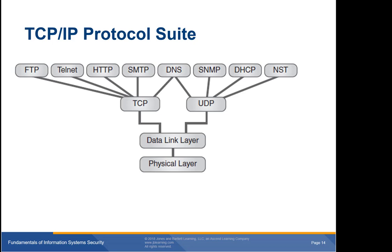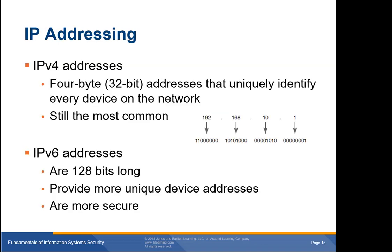The US Department of Defense developed TCP/IP to provide a highly reliable and fault-tolerant network infrastructure. Reliability, not security, was the focus. One of the primary functions of network layer protocols is to provide an addressing scheme. IPv4 addresses are 4-byte (32-bit) addresses that uniquely identify every device on the network. With an explosion in the number of network devices, it was clear that IPv4 did not allow for unique addresses for each device, which is one reason IPv6 was developed.